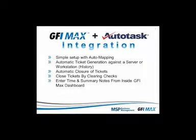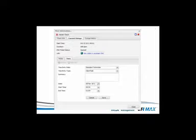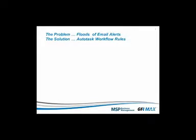Likewise, when you clear a check in GFI Max — say a hacker check that's mainly informational — as soon as you clear that check in GFI Max, it closes the ticket in Autotask. You can also enter time and summary notes from inside the GFI Max dashboard. When you're working on events that have happened and you go in to clear the check, you can enter time and notes against that check, and those automatically become billable time in Autotask — just like a time entry. So that time is billed and the ticket is closed without having to switch back and forth between systems.